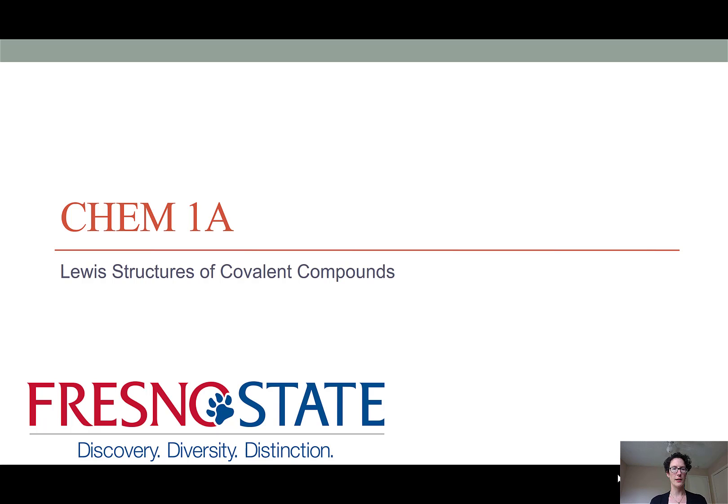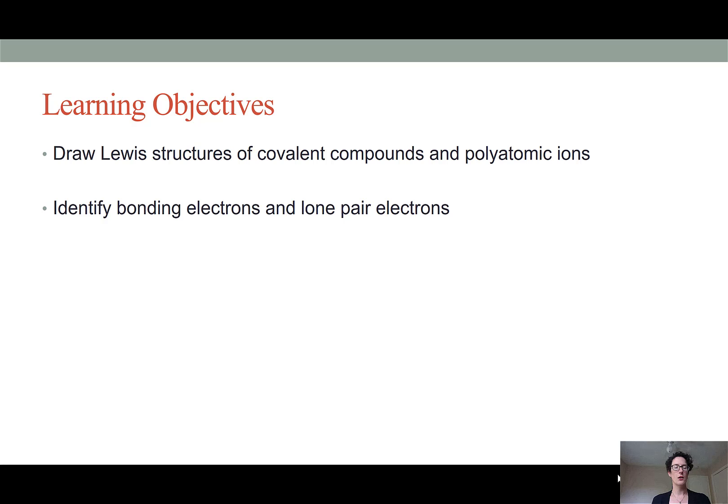In this Chem 1a lesson we'll be looking at how Lewis structures can be used to describe the makeup of some simple covalent compounds. Our main learning objective from this video is to build the skills to draw Lewis structures of covalent compounds including polyatomic ions.